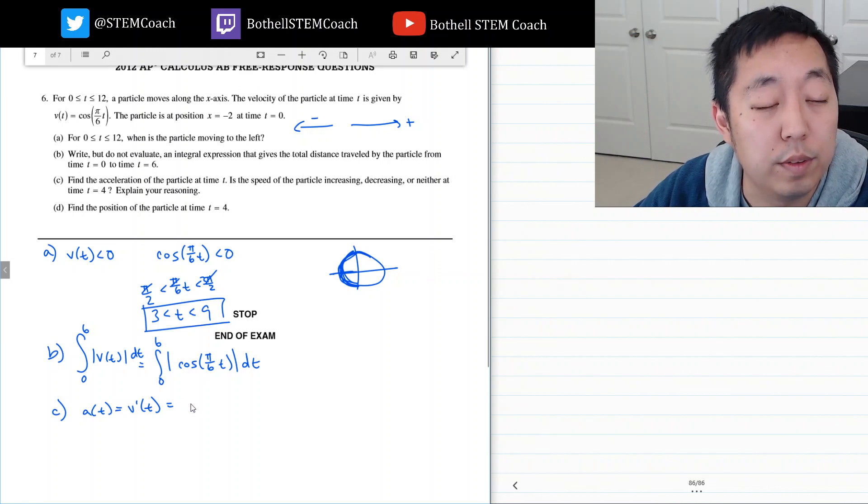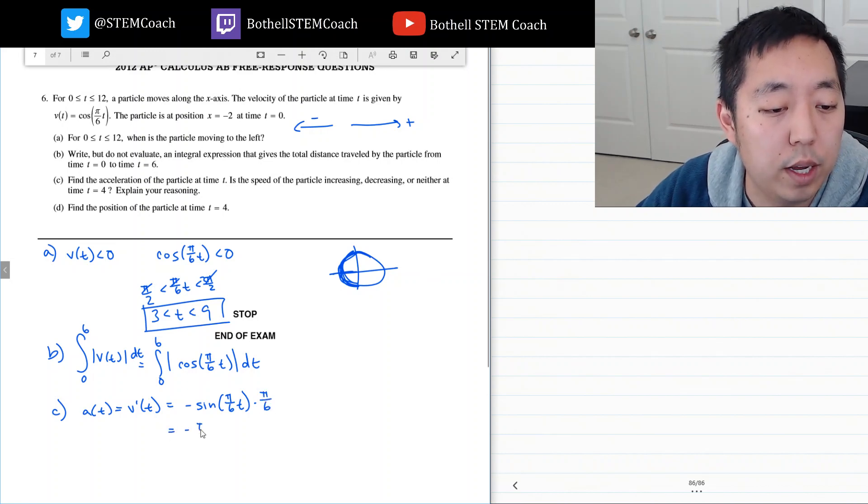Derivative of cosine is negative sine. But since the inside is not t, I got to multiply by the derivative of the inside which is pi over 6. So it's equal to negative pi over 6 sine pi over 6t. So that's the acceleration.